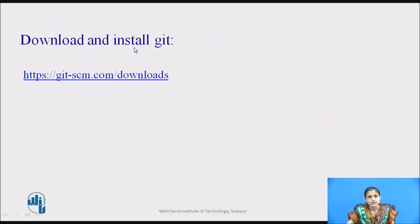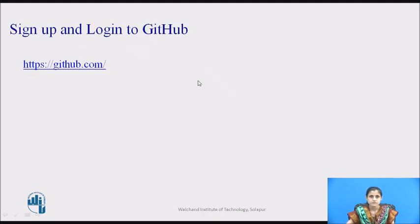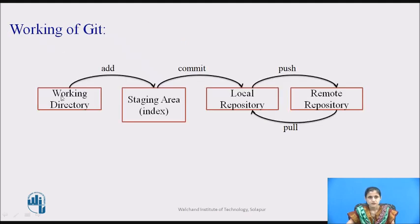To use Git, you have to download and install it — you can search on Google and you will get the download link. To use GitHub, you have to sign in to github.com. Git and GitHub are two different things. This diagram shows the working of Git: we have the working directory, we can add files to the staging area using the git add command, then files in the staging area are ready to be committed. You can commit all changes to the local repository, then push to the remote repository, or pull changes from the remote repository to the local repository. We will see all these basic commands in this video.